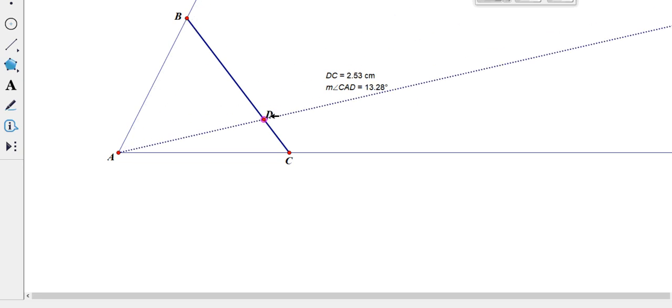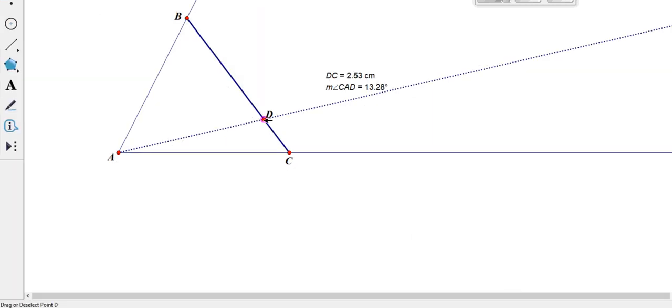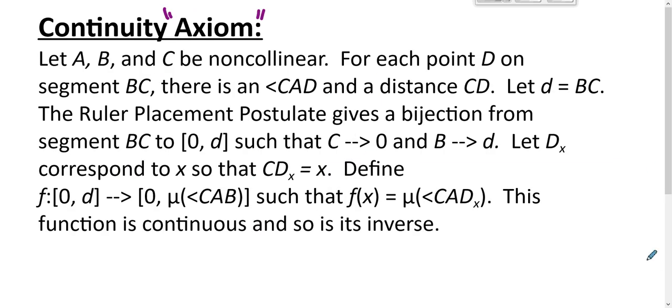There's where CD is a small x, there's where CD is almost BC. Define the function f where the domain is the numbers from 0 to d and the range is the set of numbers from 0 to the measure of angle CAB. f of x is the measure of angle C A D sub x. So here the input is 1.44 and the output is 7.15. Here the input is 4.89 and the output is 28.65. Here the input is 8.36 and the output is 52.59.